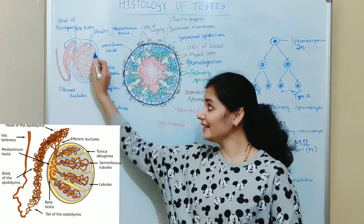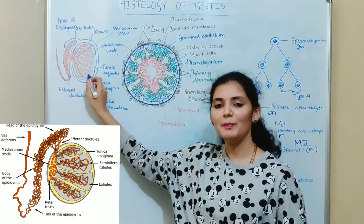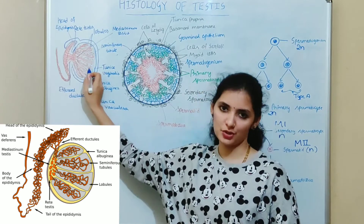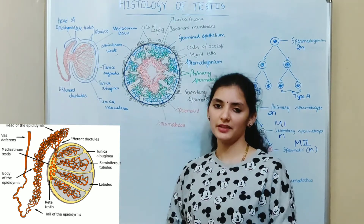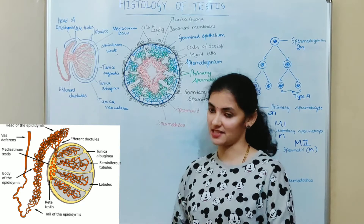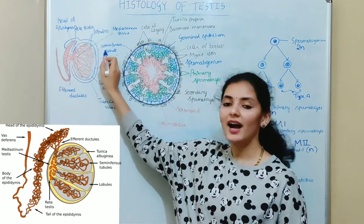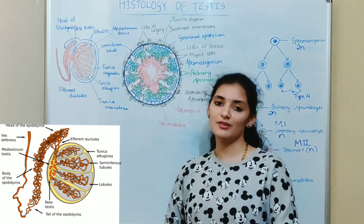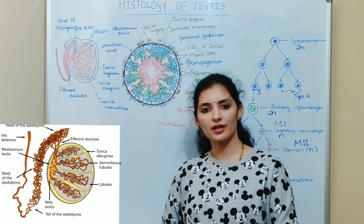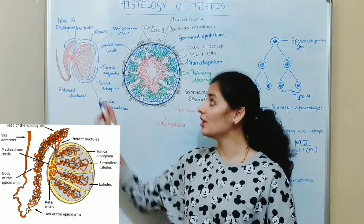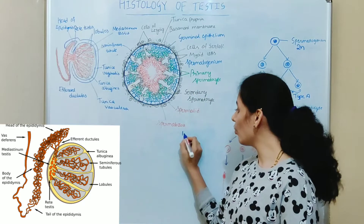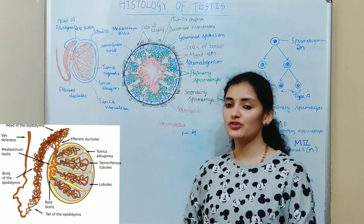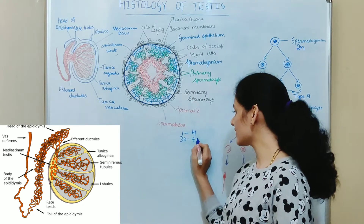If you consider the interior of the testes, it is subdivided into many pyramidal lobules and each lobule is formed by a connective tissue septum. There are about 200 to 300 lobules in each testis, and each lobule consists of highly coiled tubules called seminiferous tubules. It is inside these seminiferous tubules that spermatogenesis, or production of sperm, takes place. Each lobule consists of about 1 to 4 seminiferous tubules, and the length of each seminiferous tubule is about 30 to 70 centimeters.